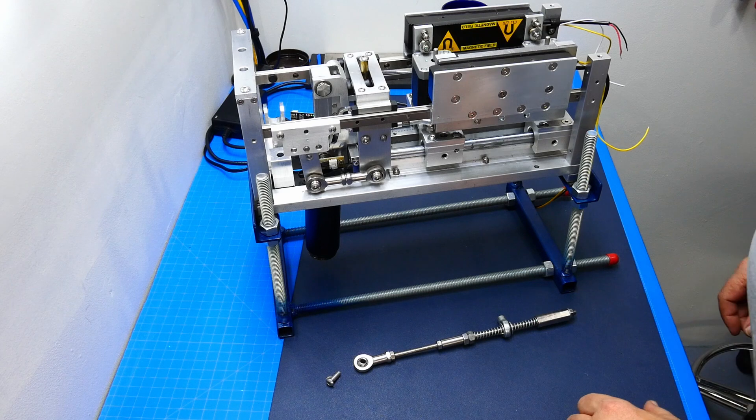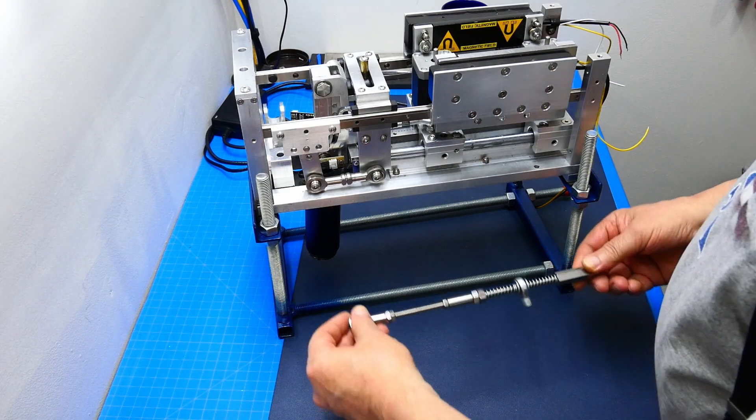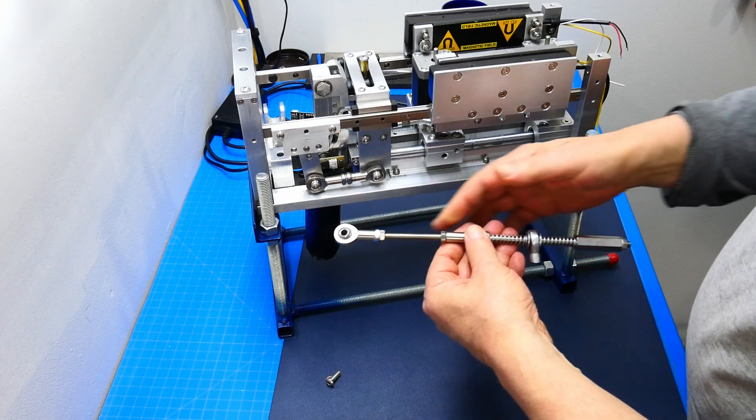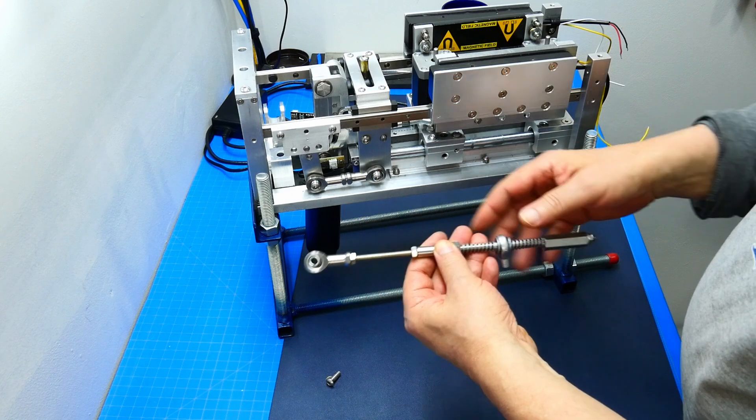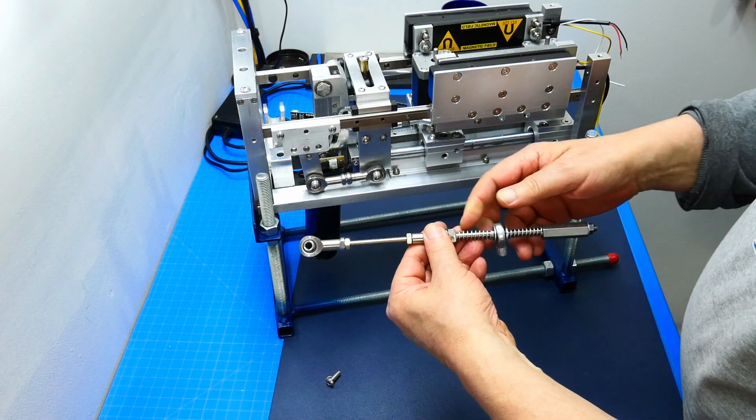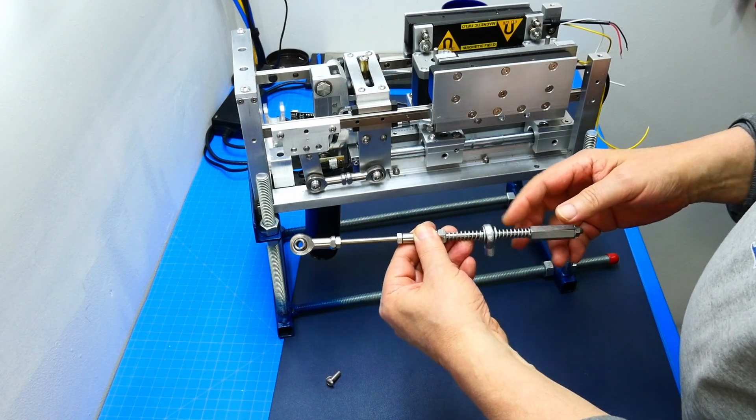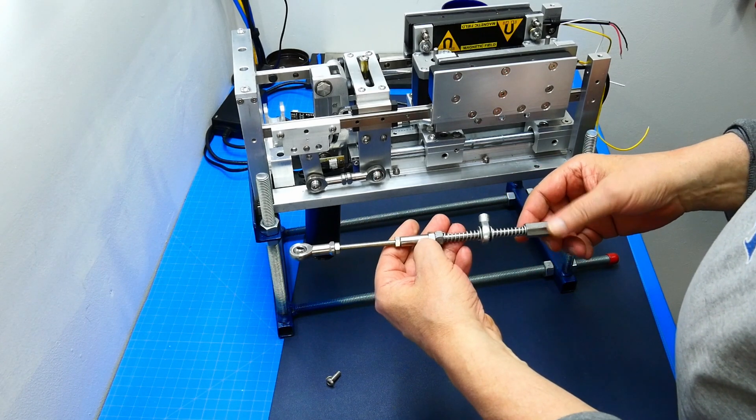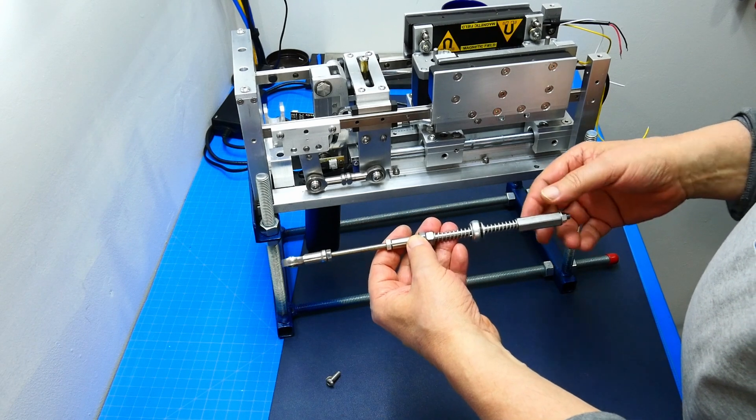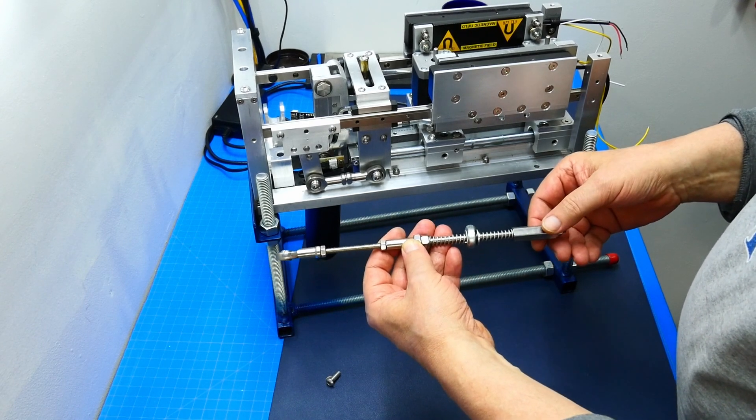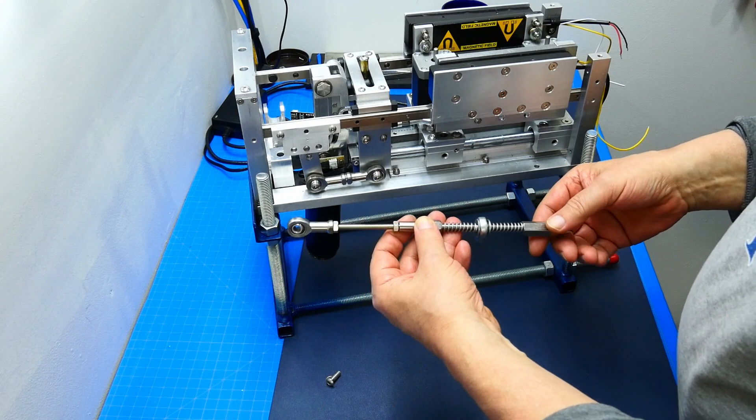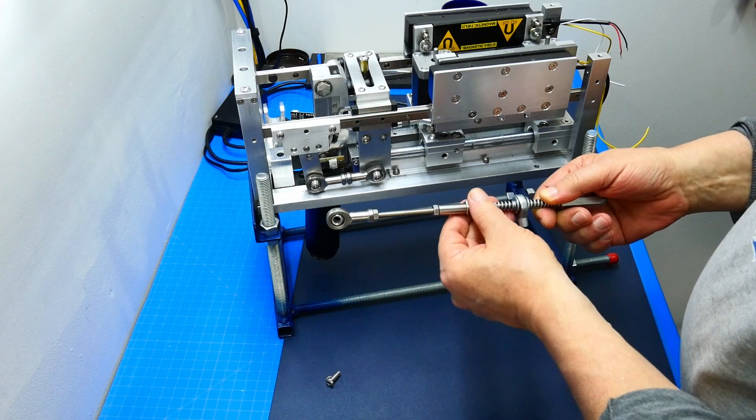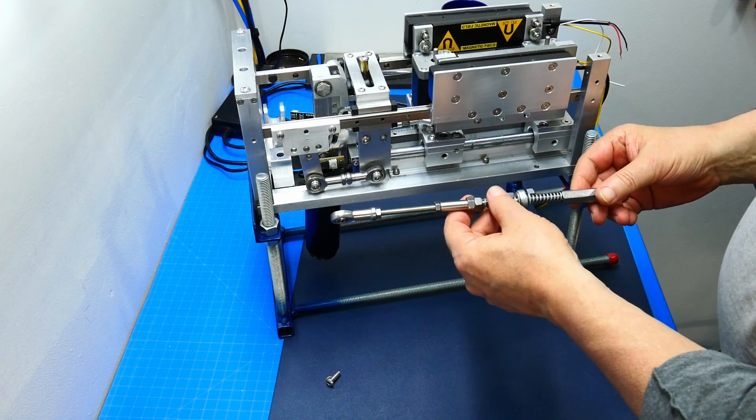So I have made here a mock-up of a spring system. This is just a standard threaded M6 rod. A coupler. And this is the rod we machined in the lathe. Or we made in the lathe. And I'm going to install this right now. This is just a spacer so to speak for right now. And this will not be the final version here. This is just a mock-up to prove the concept that it works.